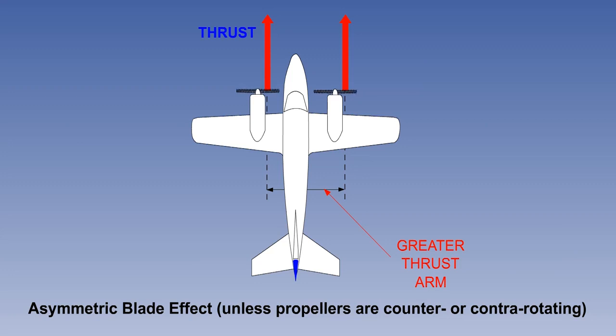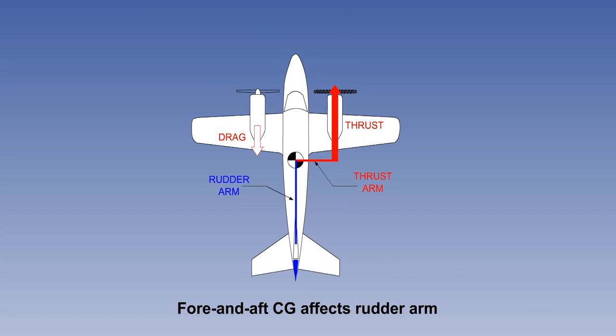If both engines rotate clockwise, the right engine has a longer thrust arm, and failure of the left engine gives a greater yaw moment. This asymmetric blade effect, or P-factor, is absent with counter-rotating and contra-rotating propellers, and of course on jets. The aircraft rotates around its CG, but its fore and aft position has no effect on the yawing moment from a failed engine.